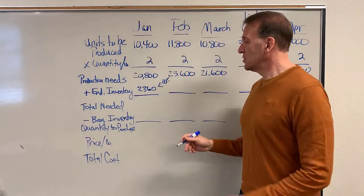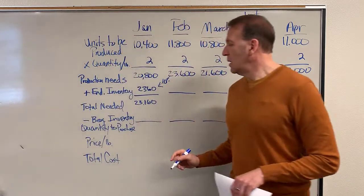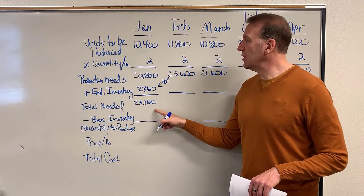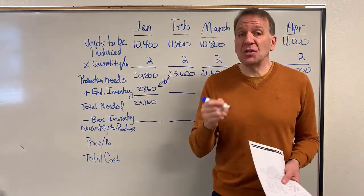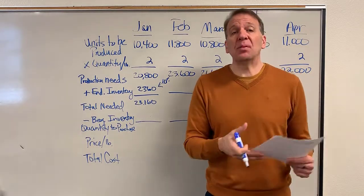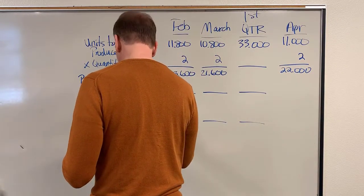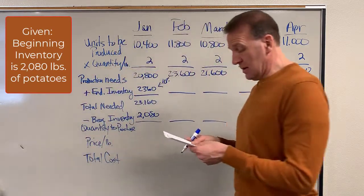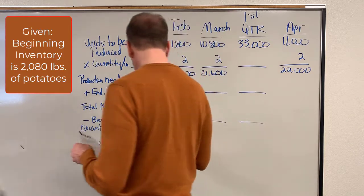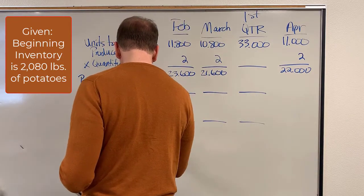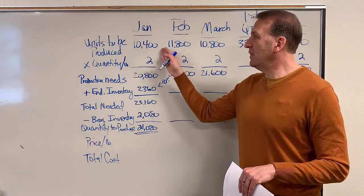That's 10% of the February number. So we add this together and get 23,160. That's what we need to produce these bags of chips and have some ending inventory left over. But the question is, do we already have some? On January 1st, the problem tells us our beginning inventory is 2,080 pounds of potatoes. So we subtract that out to get 21,080 pounds that we need to purchase in order to manufacture these potato chips.